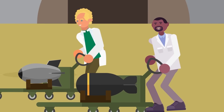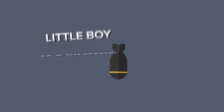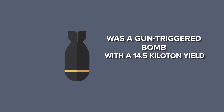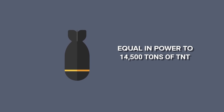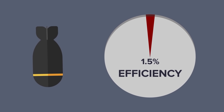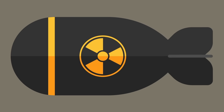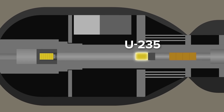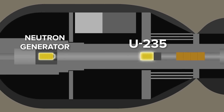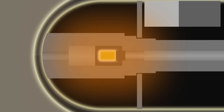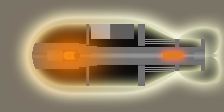Scientists developed two trigger systems for the first atomic bombs. Little Boy, the bomb dropped on Hiroshima, was a gun-triggered bomb with a 14.5 kiloton yield — equal in power to 14,500 tons of TNT. Little Boy was 1.5 percent efficient, meaning that 1.5 percent of the material fissioned before the bomb exploded. In a gun-fired nuclear weapon, a bullet of uranium-235 is placed in one end of a long tube packed with explosives, which fires the bullet down the tube where it collides with the neutron generator, initiating fission and starting the chain reaction that leads to the bomb's explosion.